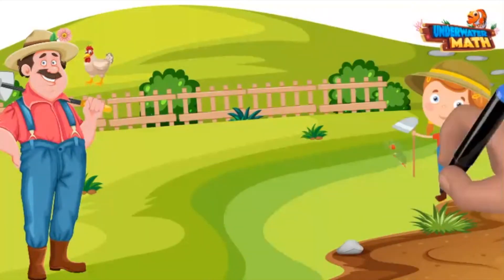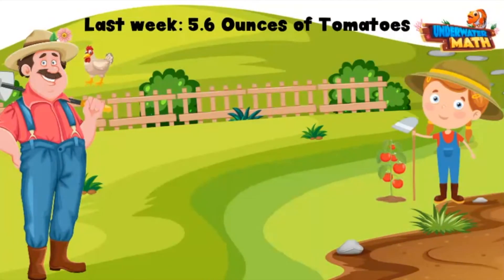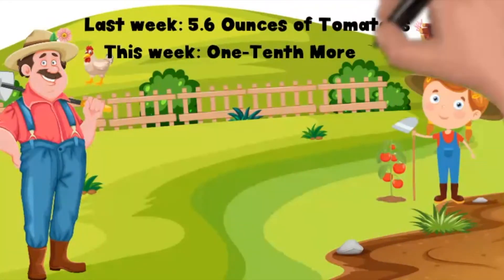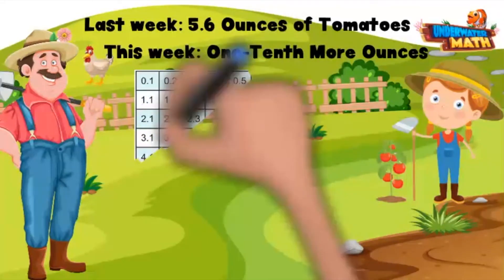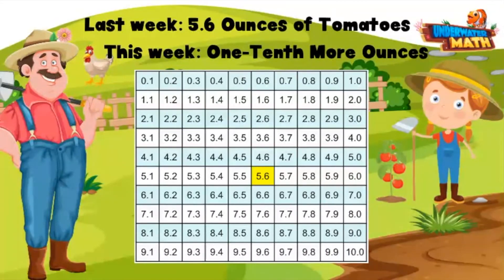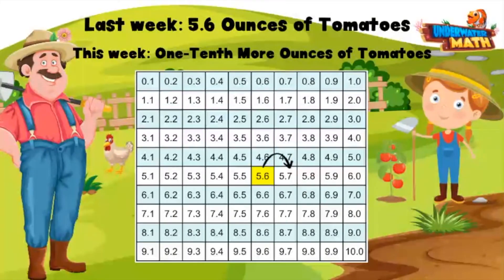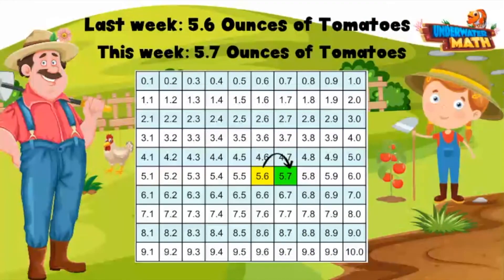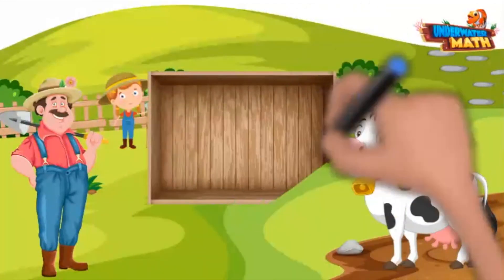Here is my daughter Alice — she grew 5.6 ounces of tomatoes last week, and this week she grew one tenth more ounces of tomatoes. To find out how many tomatoes Alice grew, we can look at a tenths chart to help us out. Remember, as you move from one number to the next, you are counting up or down by tenths. If we want to know one tenth more, we can look one square next to 5.6. One tenth more than 5.6 is 5.7. Great work, Alice!